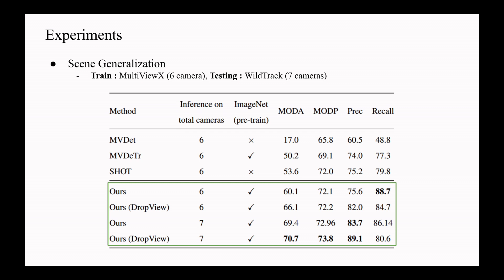The third setting is scene generalization. We use synthetic dataset MultiviewX with 6 cameras to train the model and report the performance metrics on real dataset WildTrack with 7 cameras to simulate synthetic to real adaptation. To have a fair comparison of our model with previous work, we drop one camera from WildTrack which has significantly higher overlap with all remaining cameras. However, even without additional views, our model achieves a MODA score of 66.1.